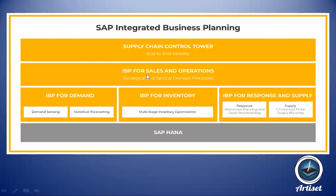As mentioned, Integrated Business Planning started with only one module — IBP for Sales and Operations. Then other modules were merged: IBP for Demand, IBP for Inventory, IBP for Response and Supply, and Supply Chain Control Tower.